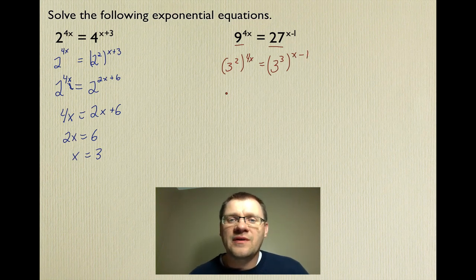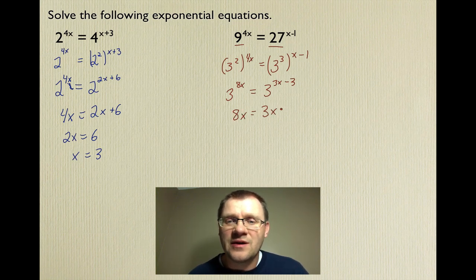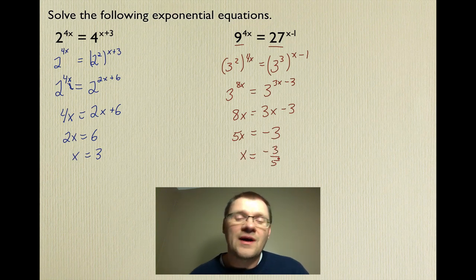So when we multiply these exponents together, we get 3 to the power of 8x. And 3 to the power of 3x minus 3. So in the end, I get 8x equaling 3x minus 3. I can solve for this again, and I subtract 3x from both sides. I get 5x equals negative 3. That means x is equal to negative 3 fifths. So that is how you solve exponential equations when you can rewrite them with the same base.